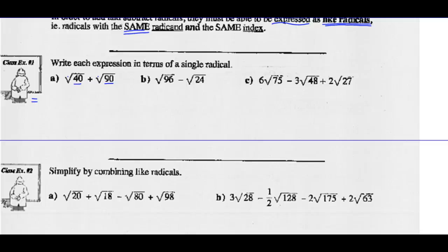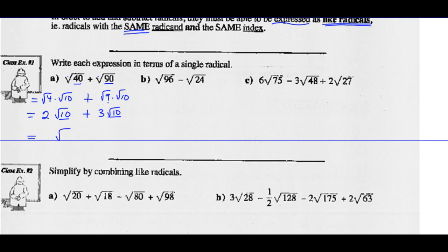So 40 can be written as 4 times 10. I would rewrite the square root of 40 as the square root of 4 times the square root of 10, plus the square root of 90 rewritten as the square root of 9 times the square root of 10. The square root of 4 is 2, so root 40 is the same as 2 root 10. The square root of 9 is exactly 3, so we leave that as 3 root 10. Now we can add these because they've got the exact same index number and radicand: keep root 10 and add 2 plus 3 — that's 5 root 10.